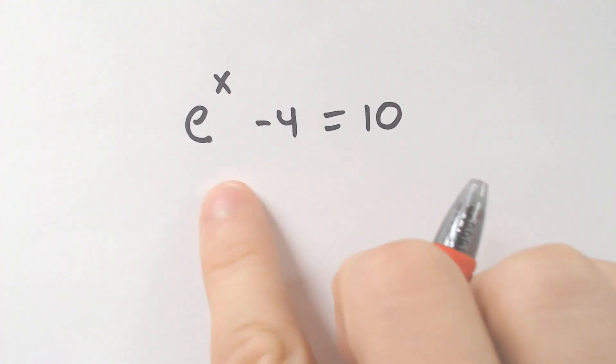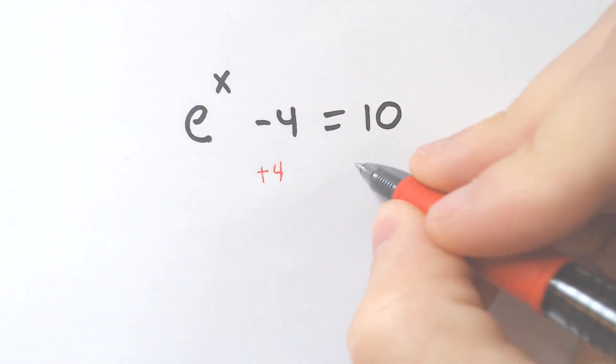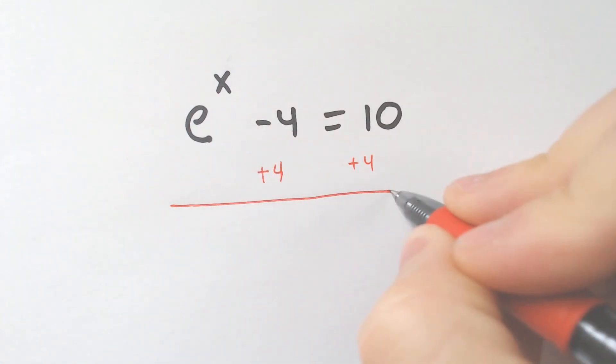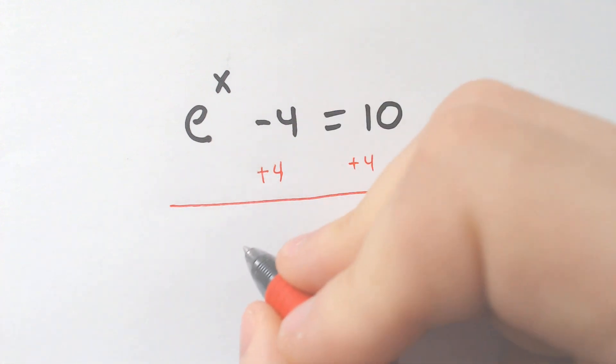If you have a problem with an E or an LN, the first and most important step is to get that E or LN by itself. So now I would just add 4 and get E to the X is equal to 14.